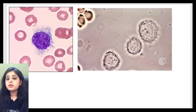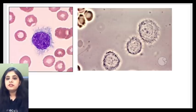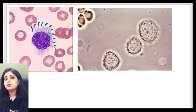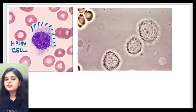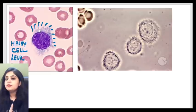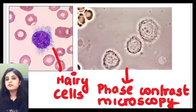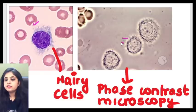Just by looking at this particular slide, you should be able to guess what these cells are. These are some kind of lymphoid cells showing cytoplasmic hairy projections — these are hairy cells, and the disorder is hairy cell leukemia. To best visualize these hairy projections, the best microscopy is phase contrast microscopy. Here in image one, you can clearly see those thin projections very well appreciated on phase contrast microscopy.